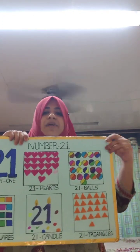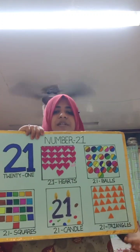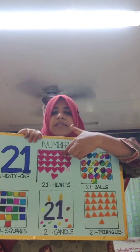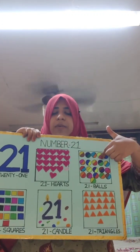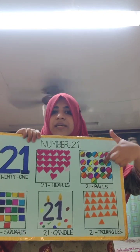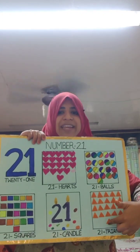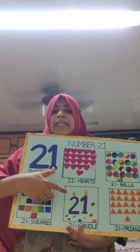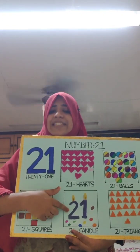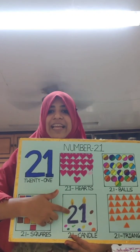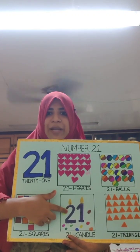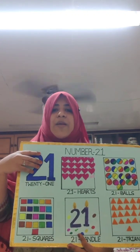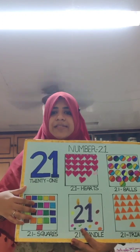Here you can see some of the objects on the flashcards. Here it is 21 hearts, 21 balls, 21 triangles, 21 squares. And here you can see a candle of number 21. Now let us count these squares.